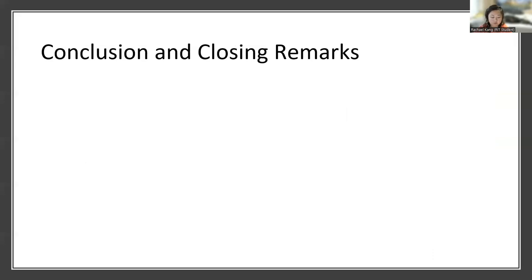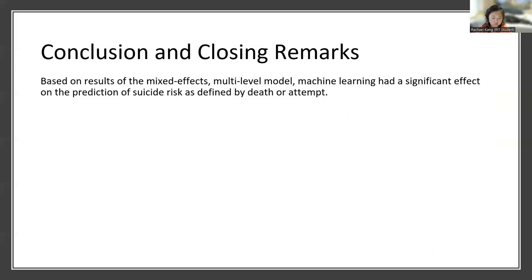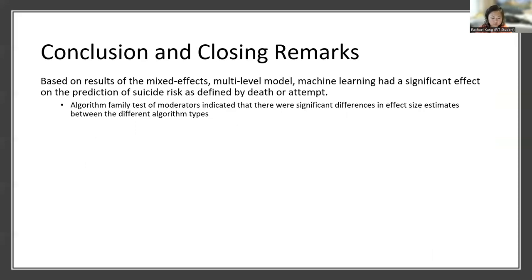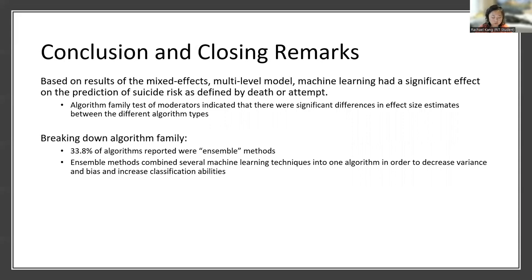Conclusions and closing remarks. Based on the results of the meta-analysis, machine learning has a significant effect on the prediction of suicide risk. When delving into the moderators, the type of algorithm used had a significant impact on accuracy reports. When we look inside the model of algorithm family, ensemble methods had one of the highest accuracies reported, and it was also one of the most frequently used methods of machine learning.